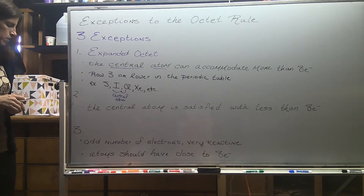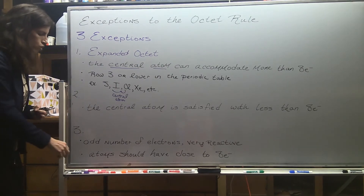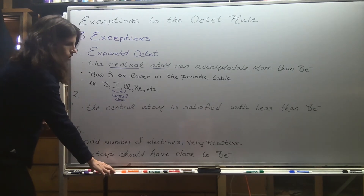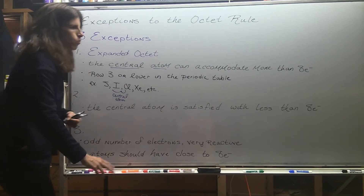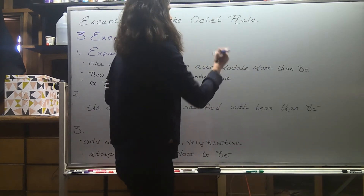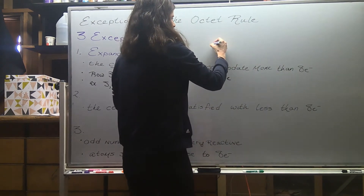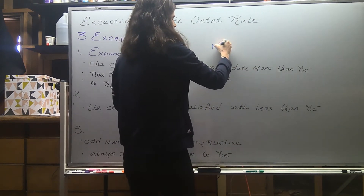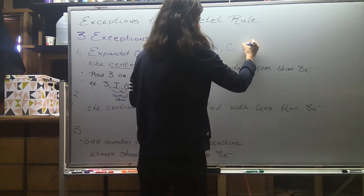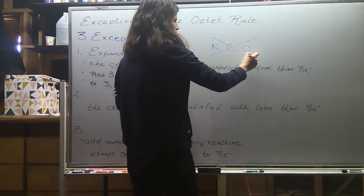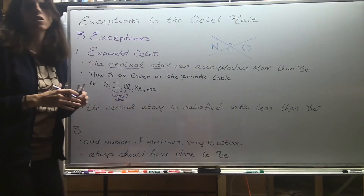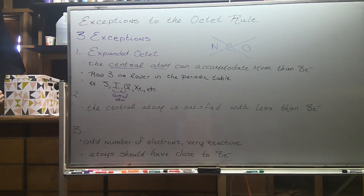However, be really careful looking at row two of the periodic table. Nitrogen, carbon, and oxygen - these never do an expanded octet. So no expanded octet for those row two atoms.